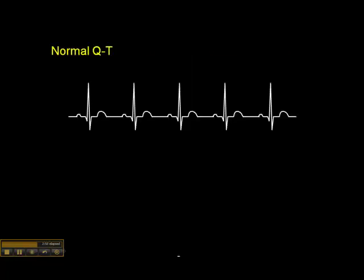If it appears to be prolonged, I'll look at it in a little more detail. A normal QT interval should be less than half of the R-to-R interval. So here's the R-to-R interval, and the halfway point is about here. You can see that the T wave ends before the halfway mark. So that's a normal QT interval.